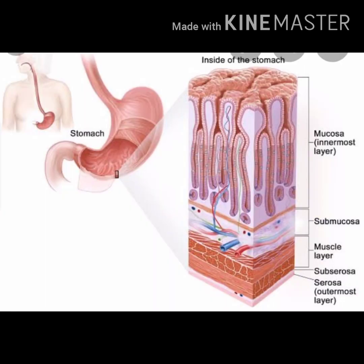We have already seen that there are different layers in the stomach tissue: the mucus layer, the submucosa, the subserosal layer, and the serosa layer. The innermost layer in contact with HCl is called the mucus layer.